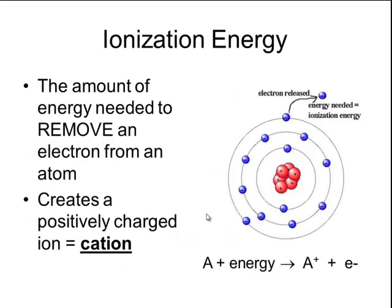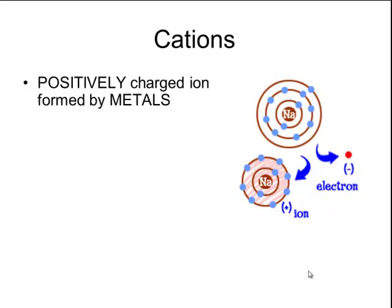Another trend on the periodic table deals with ionization energy — the amount of energy needed to remove an electron from an atom. For example, magnesium has 1s2, 2s2, and 2p6 inner electrons, and two third-level outermost electrons. Removing one electron requires adding energy: atom + energy → positively charged ion + electron. That positively charged ion is called a cation. By definition, cations are positively charged ions.